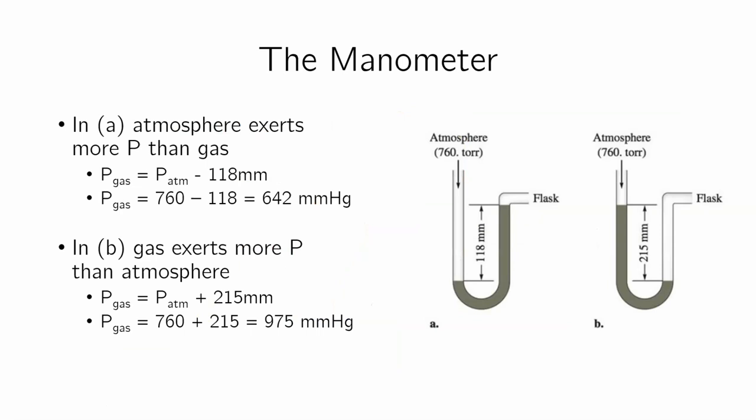Another sort of nifty device is the manometer. The manometer, instead of measuring the atmospheric pressure, it measures the pressure of a random gas. So I have the atmosphere here exerting a pressure onto this tube. I have mercury here in this dark gray, and the other side here is a flask attached, imagine like a big bulb here, where a gas hangs out. And so the idea is, well, I want to know what the pressure of this gas that's in this flask.